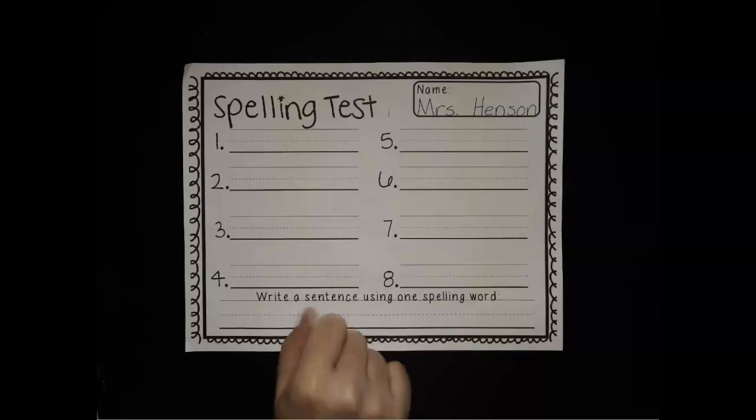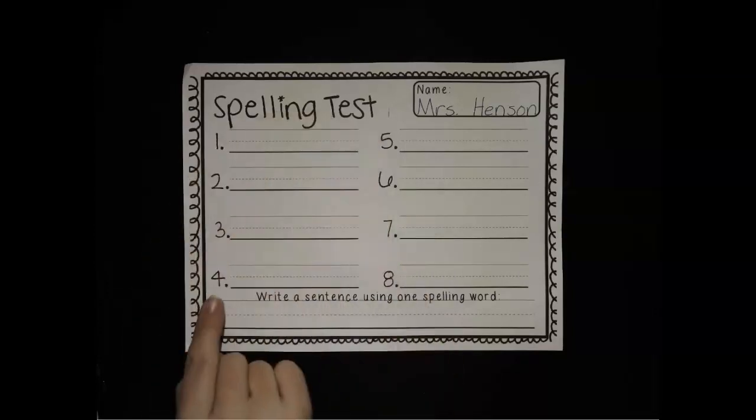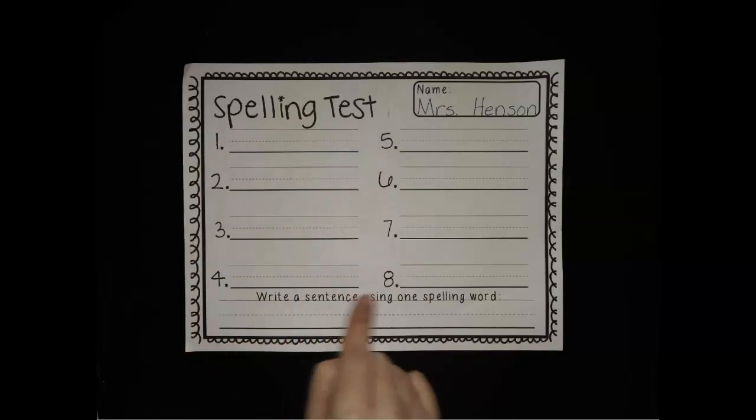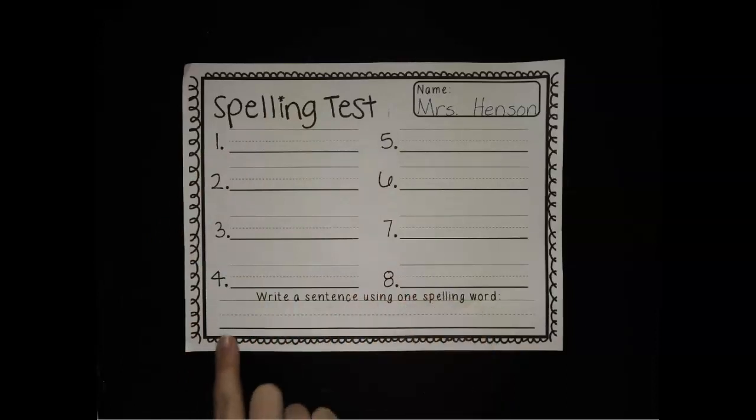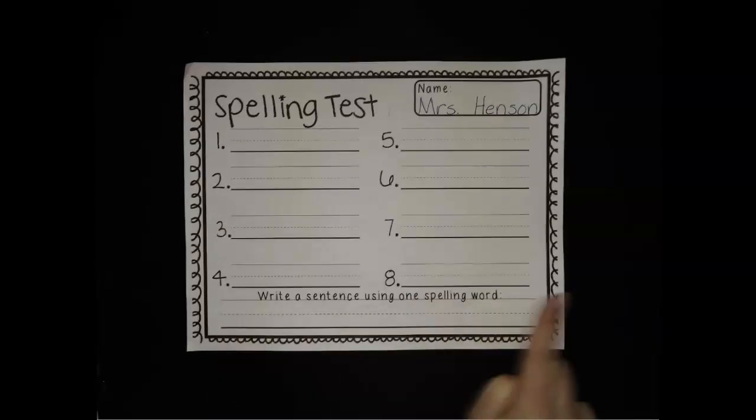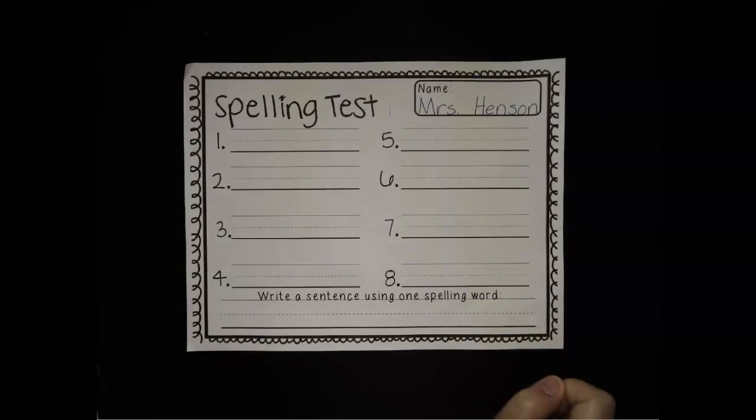All right, great job, friends. All right, choose one of those words and at the bottom write a sentence using one spelling word. When you write your sentence, what should it start with? A capital. And what should it end with? A period. Very good.